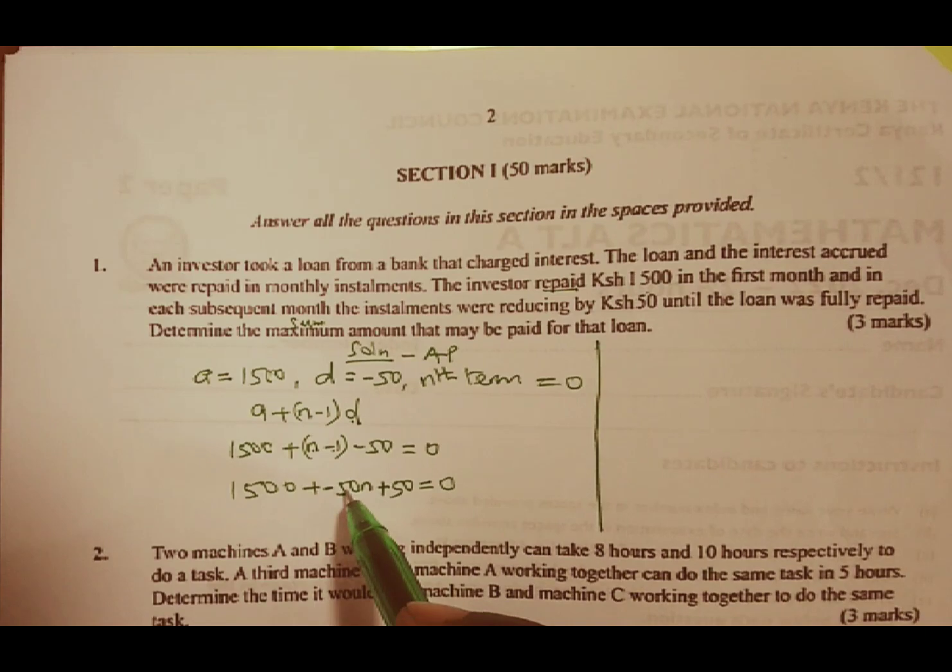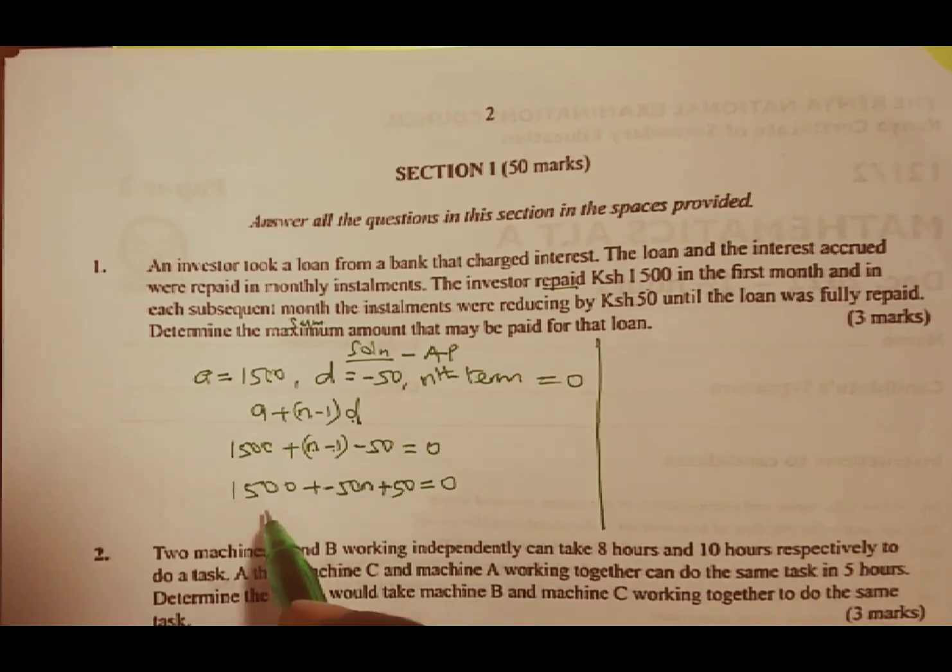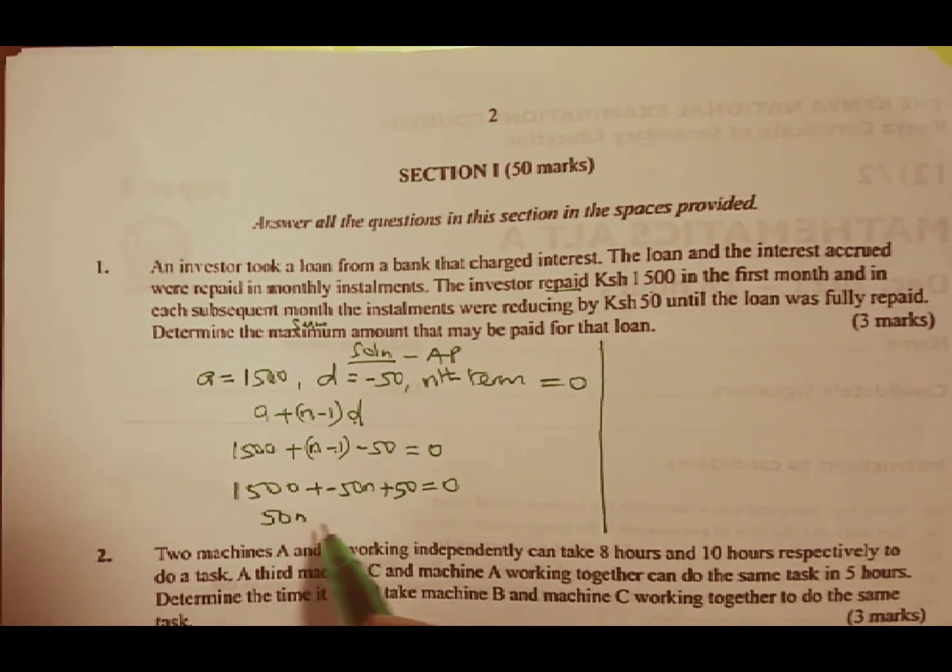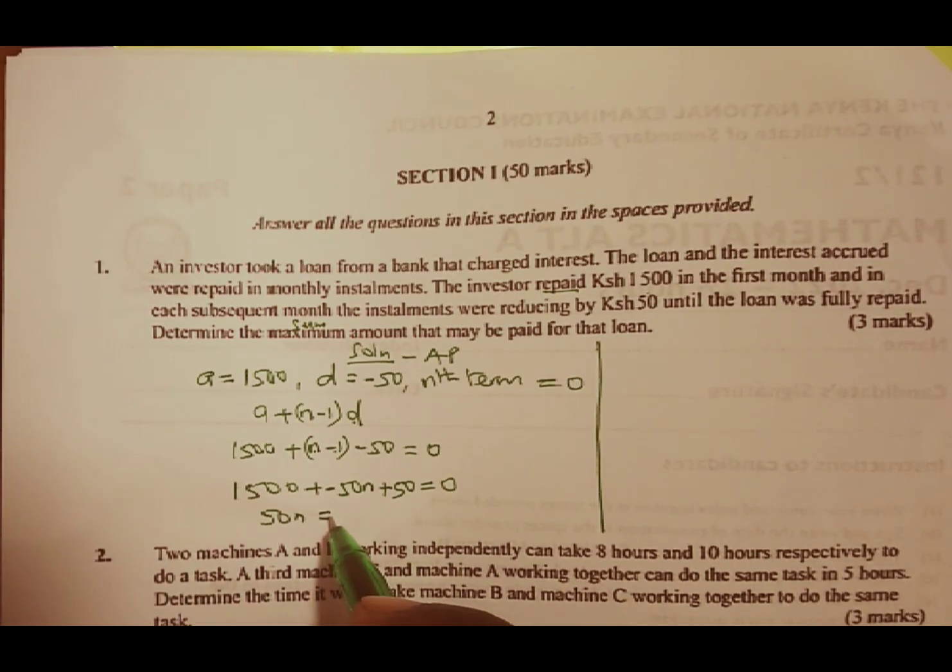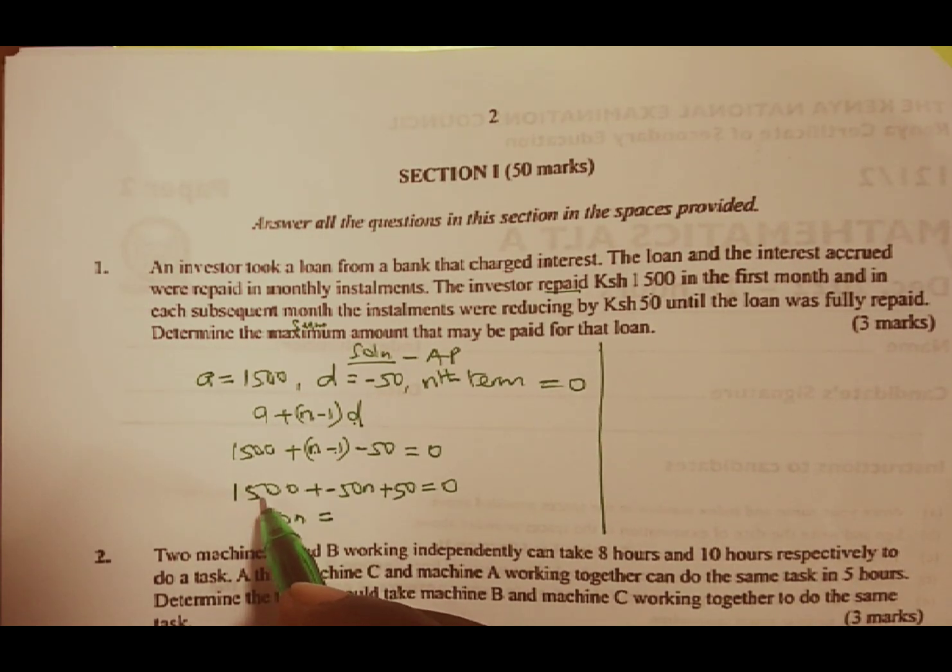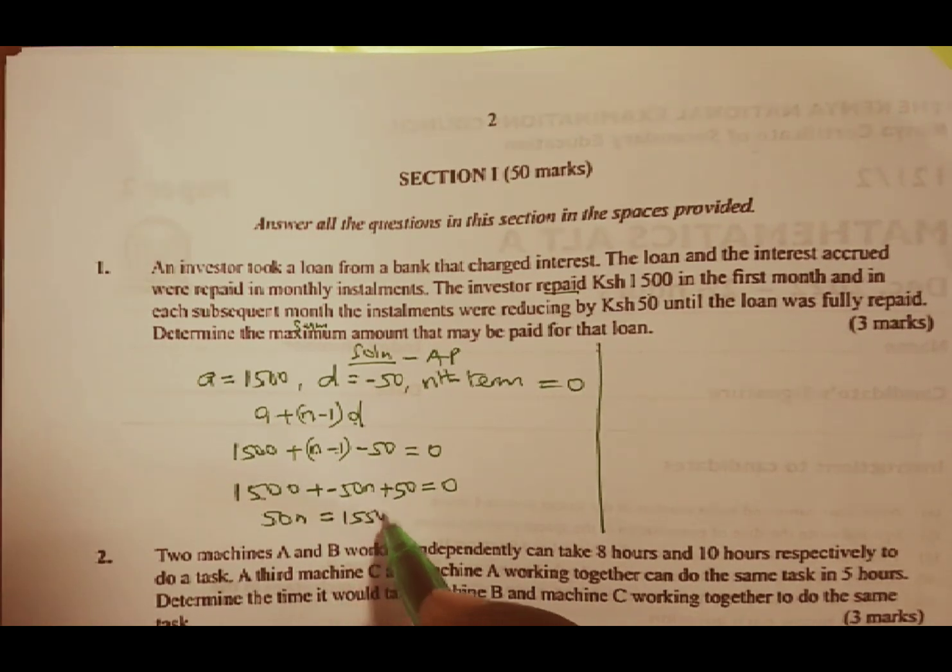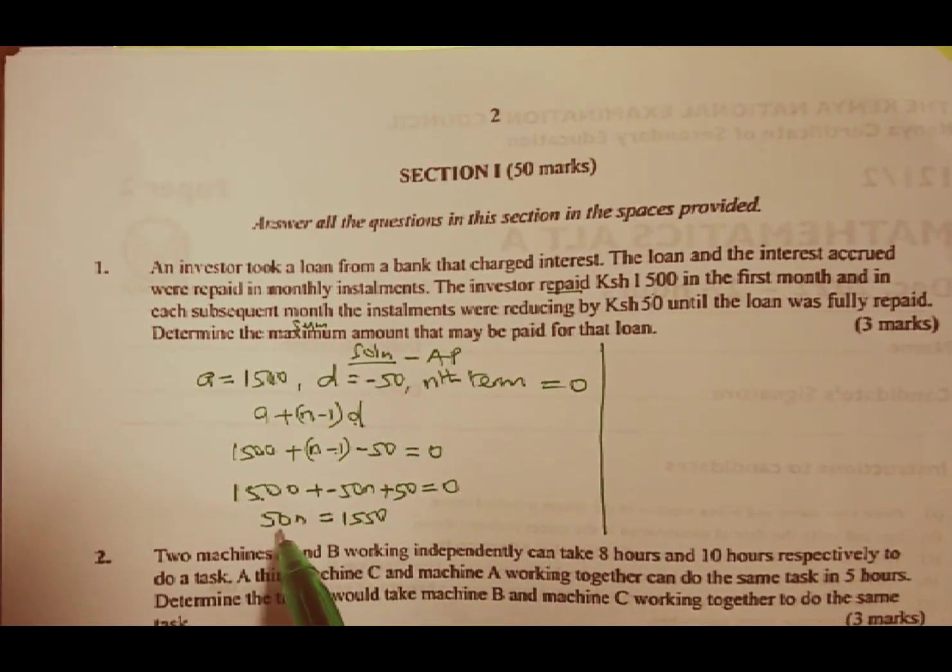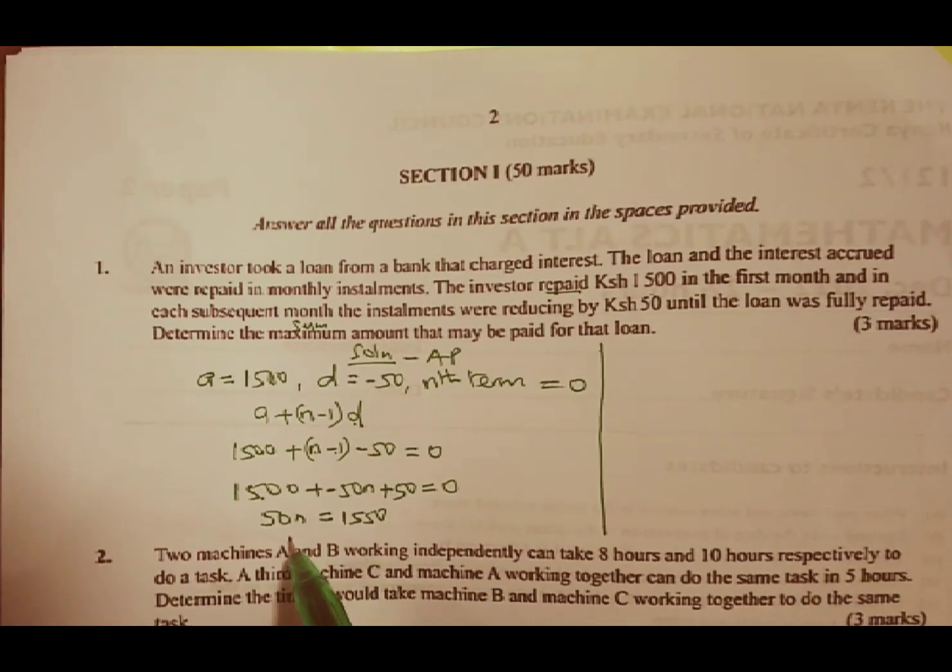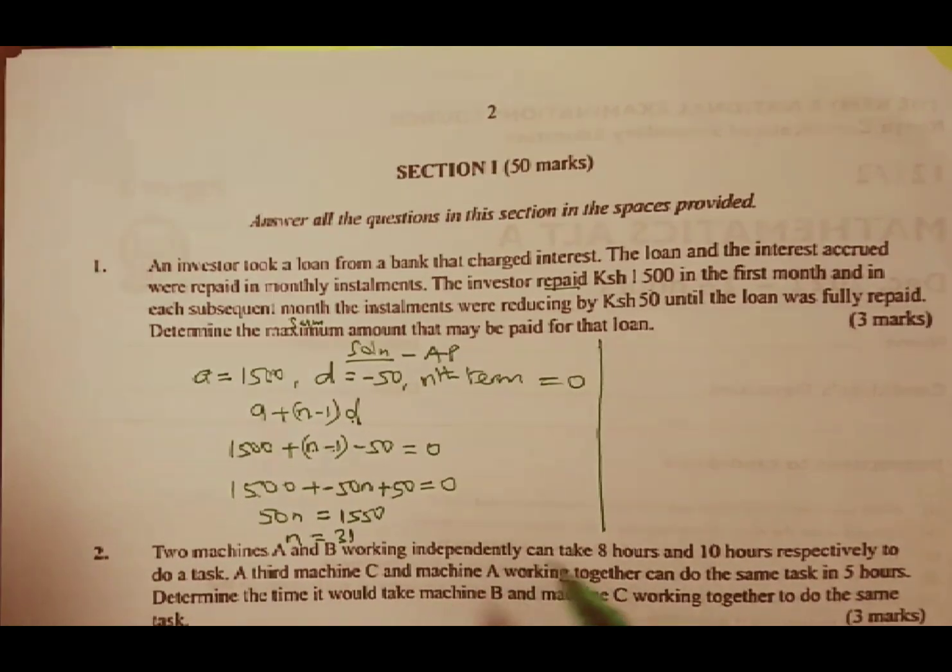From there, if we take negative 50 to the other side, we are going to have 50N being equal to 1500. You add 50, you get 1550. And if you divide both sides by 50, our N is going to be equal to 31.